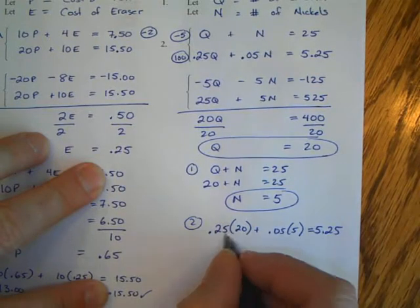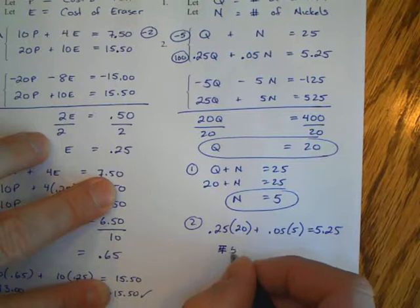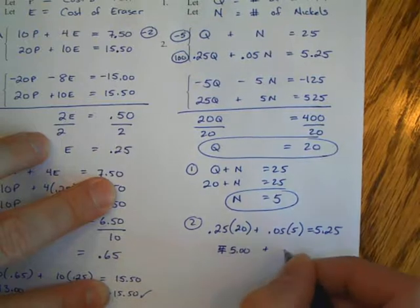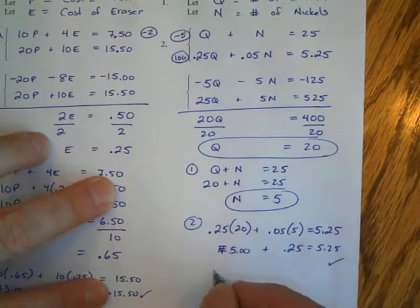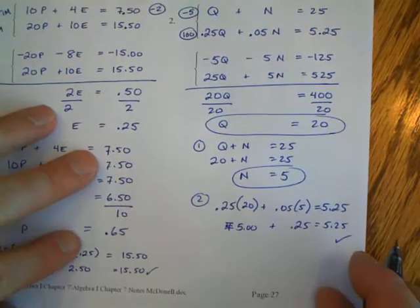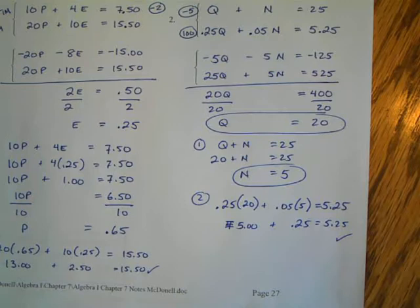Now that I've got both answers, I want to check it in the second equation. So I'm going to plug it into the second equation: 0.25 times 20 plus 0.05 times 5 equals $5.25. Well, 20 quarters is $5, and 5 nickels is $0.25. So that equals $5.25, and the problem checks.